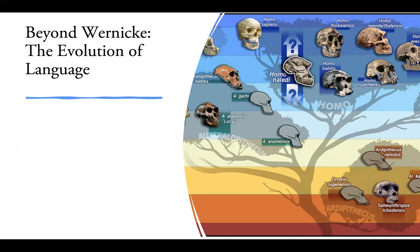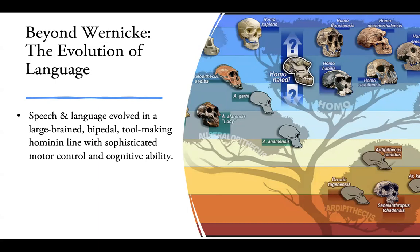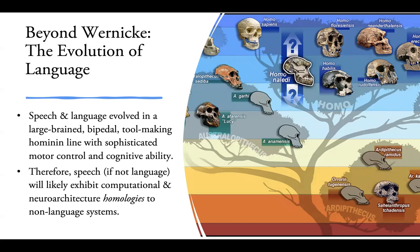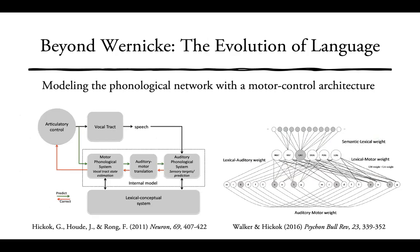Wernicke's model is a sketch of what we currently understand, but the framework is essentially correct. Here's the logic: speech and language evolved in a large-brained, bipedal, tool-making hominin line with sophisticated motor control and cognitive ability. This means speech — if not language — will likely exhibit computational and neural architectural homologies to non-language systems. That allows us to look to motor control in manual behavior as a homolog to speech abilities, which was part of the inspiration for the dual stream model as Poeppel and I conceived it.